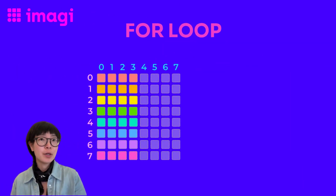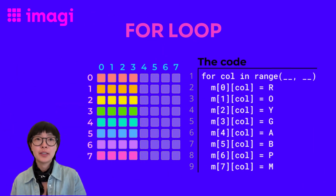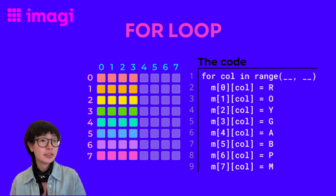How about half of a rainbow? Can you guess what the two numbers should be inside of our range function? Yes, it's 0 and 4.